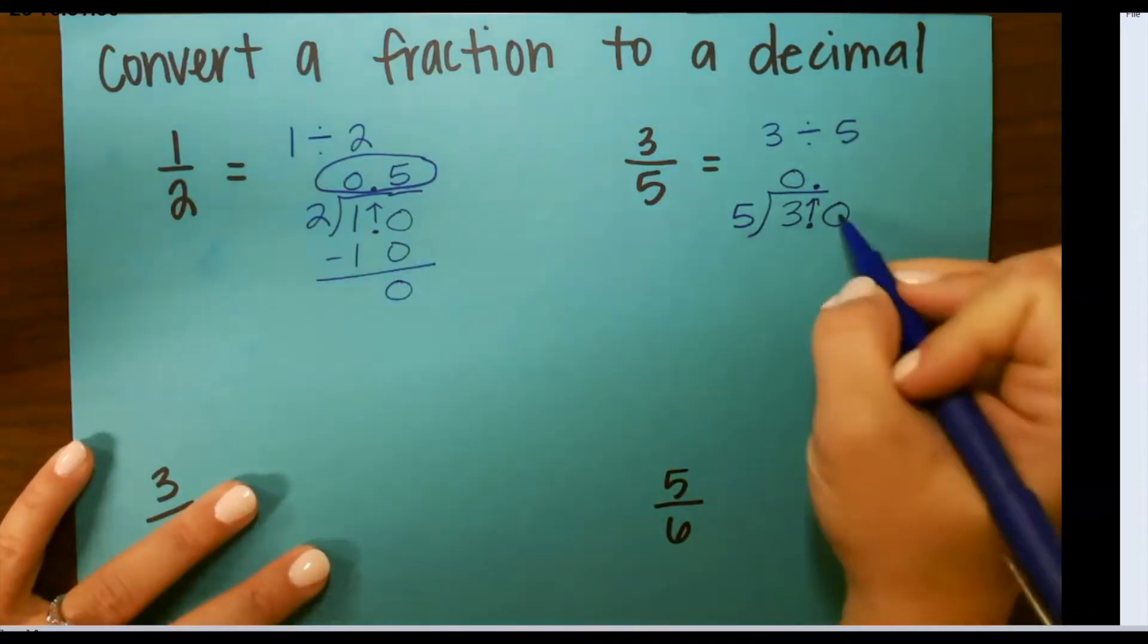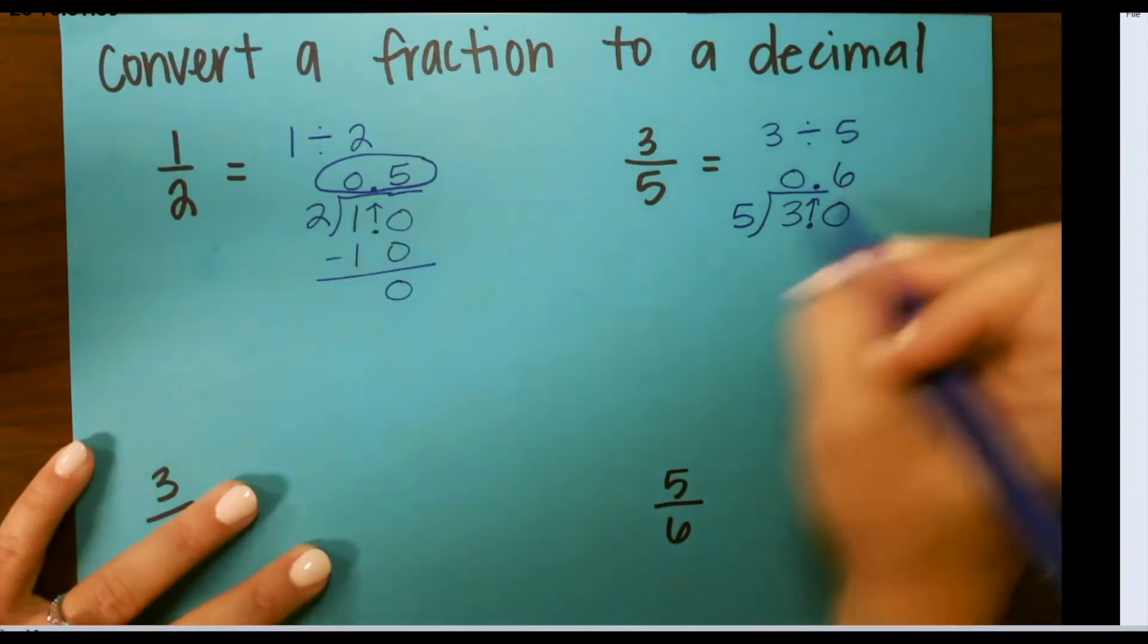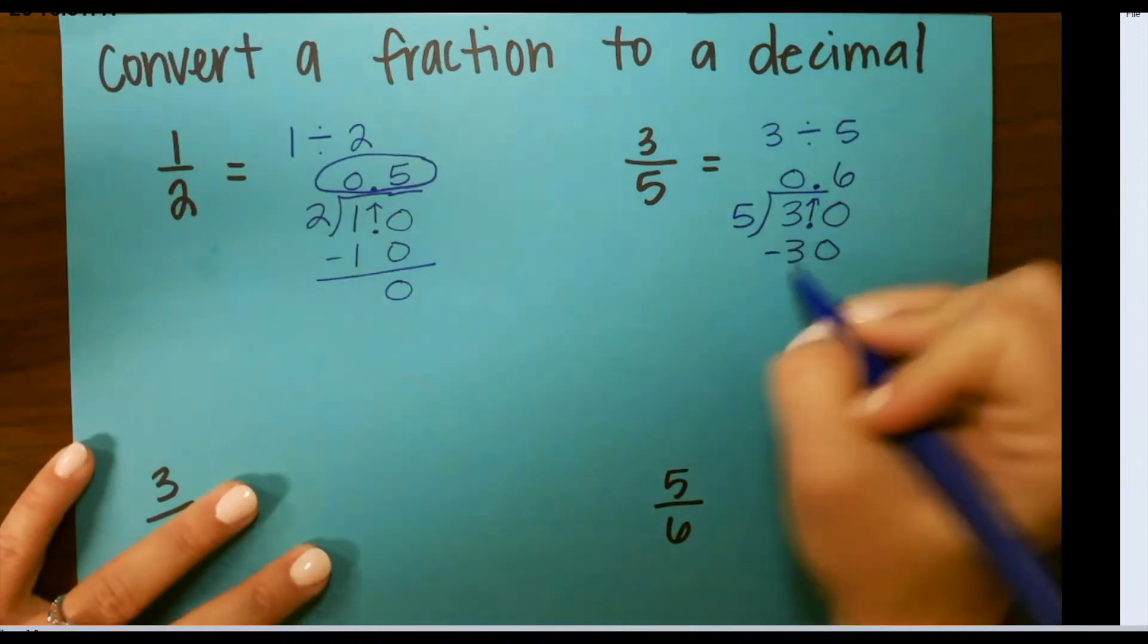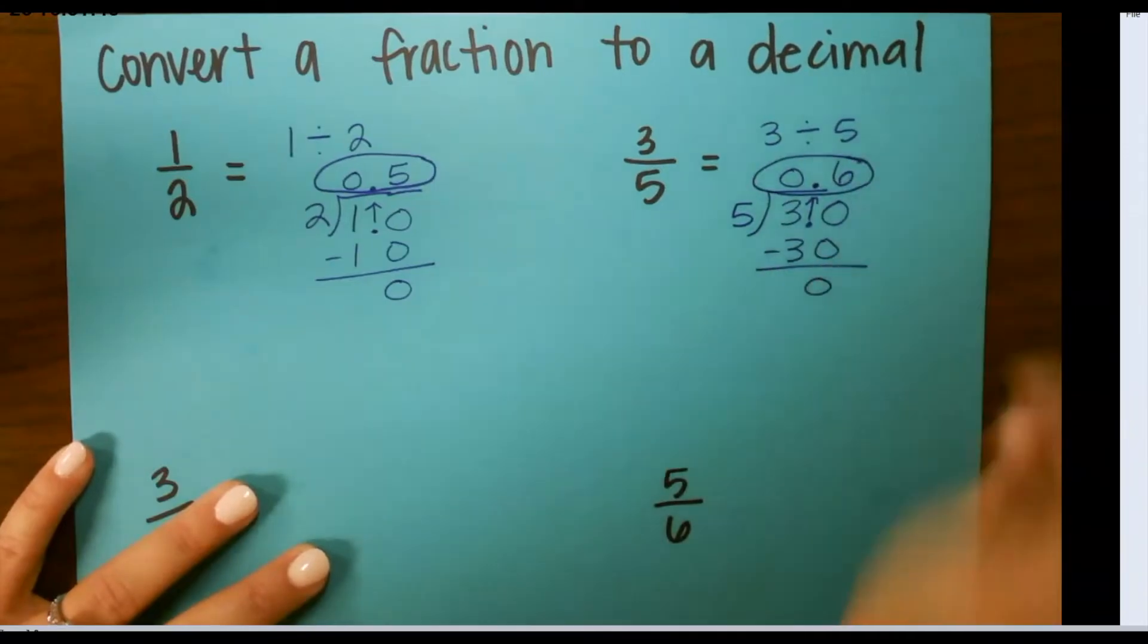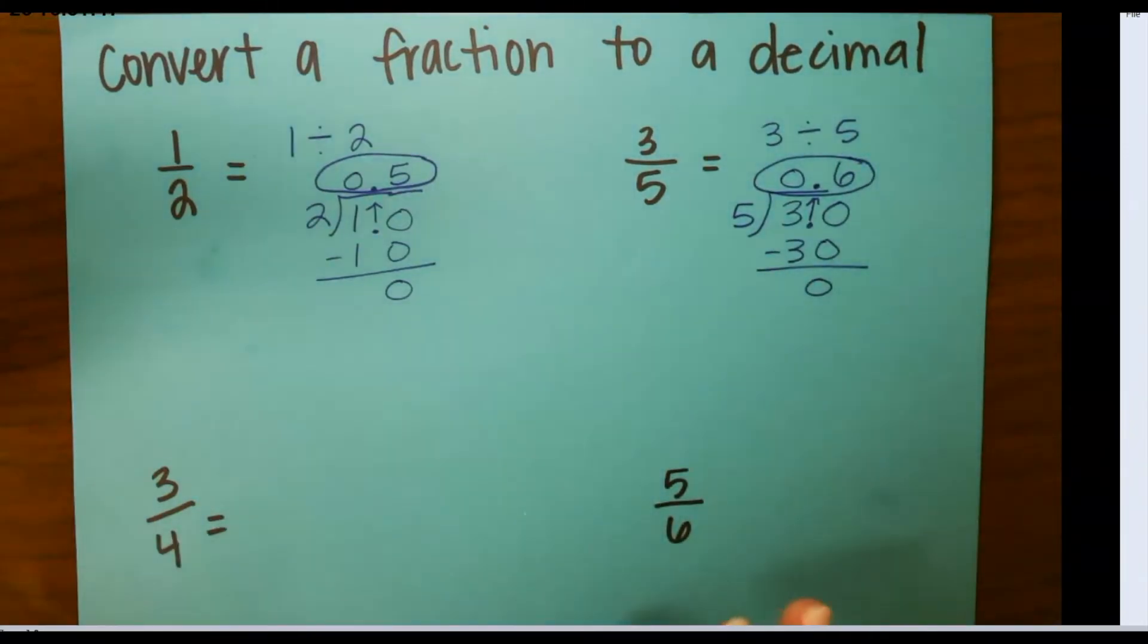Now, 5 goes into 30 6 times. 6 times 5 is 30, so my decimal for 3 fifths is 0.6 or 6 tenths.